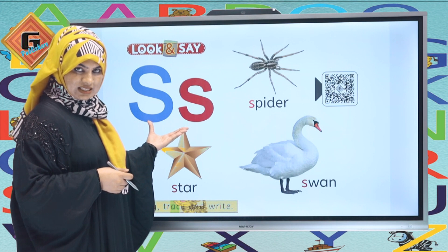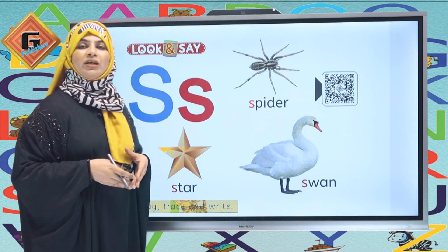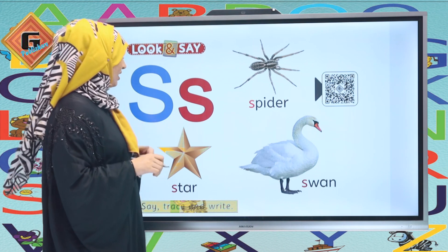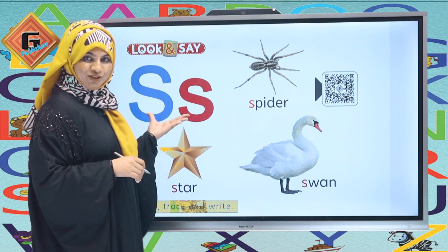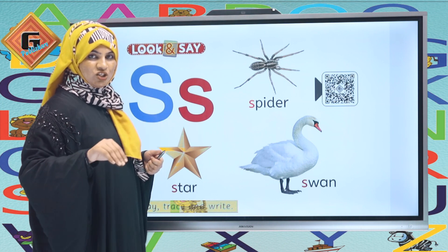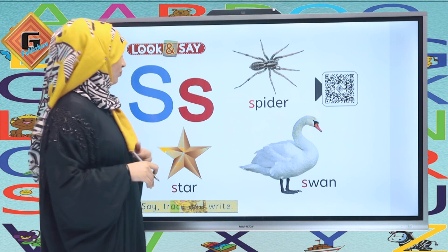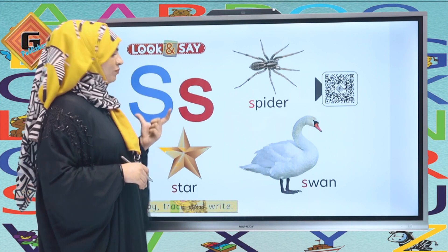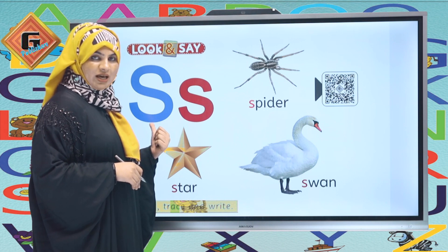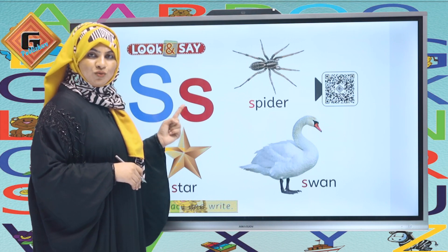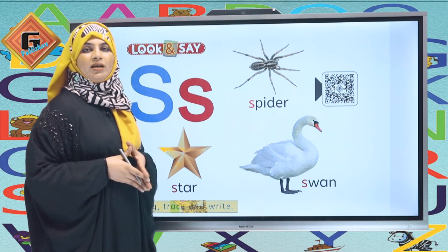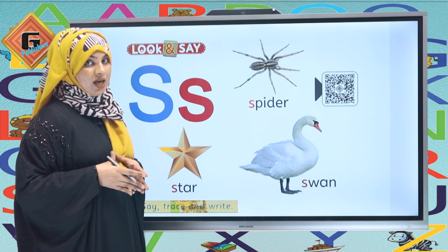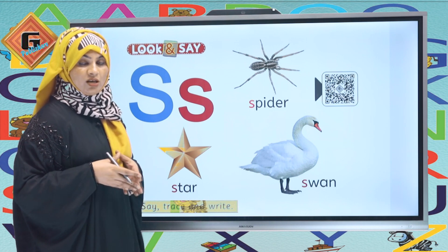The sound of letter S is just like the shape of the letter S — we will make the action: snake. This is capital S and this is small S. Look and say: what is this? This is capital S and this is small S. What is the sound? It's S as in snake.